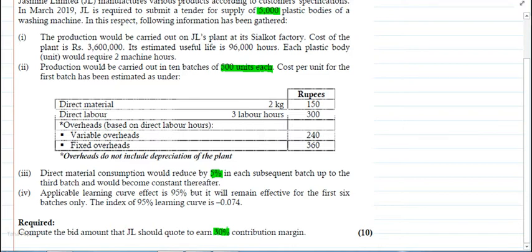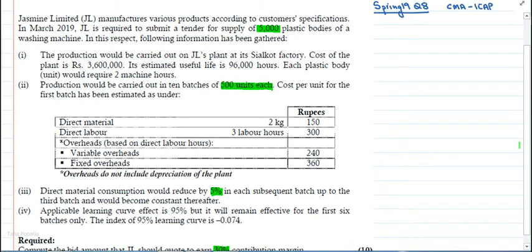This is a simple 10 marks question. Let's work on the direct material cost. The first batch, 1 unit was Rs. 150. As per unit cost, in one batch there are 500 units. So 500 into 150 - that is the first batch.